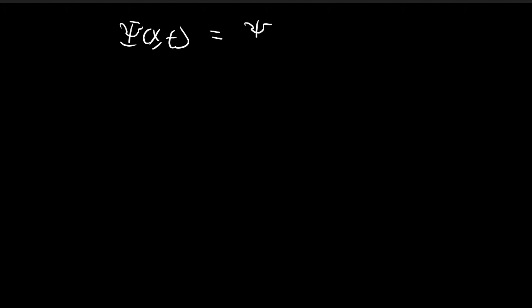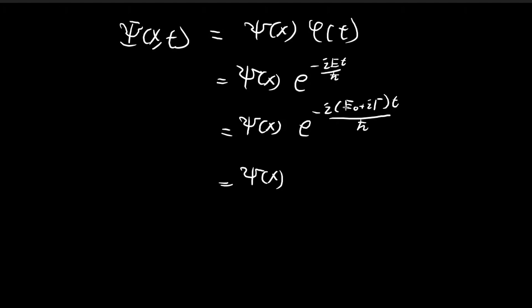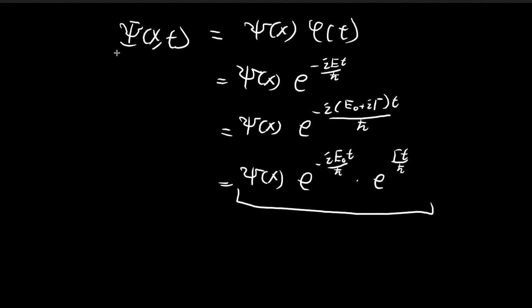We can do that by first considering the wave function. The wave function is a combination of xi of x, the x component, times phi of t, the t component. We know phi of t can be written in a certain way, and we substitute the alternative expression for E inside here — E is given by E₀ plus an imaginary component. Putting i inside the exponent bracket, we get e to the power of negative i E₀ t divided by h-bar, and e to the power of gamma t divided by h-bar, since negative i times i equals positive 1, removing the negative sign.